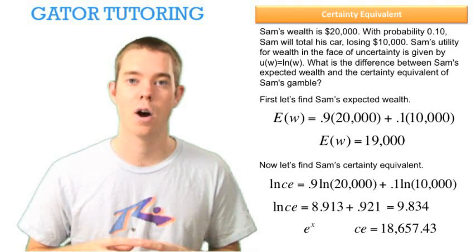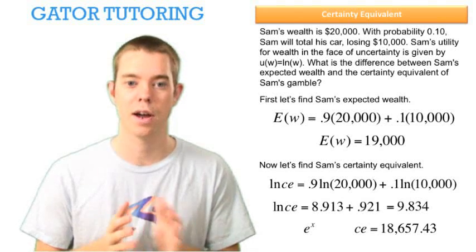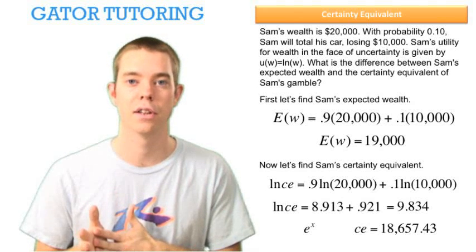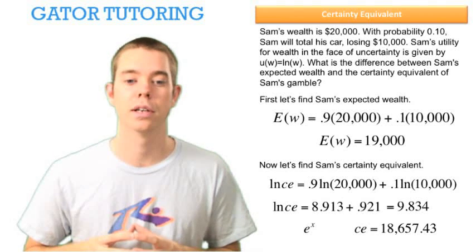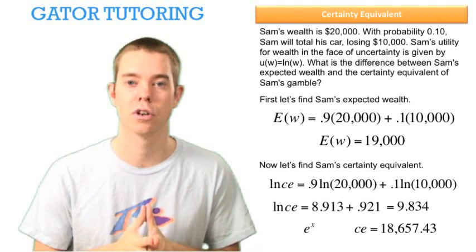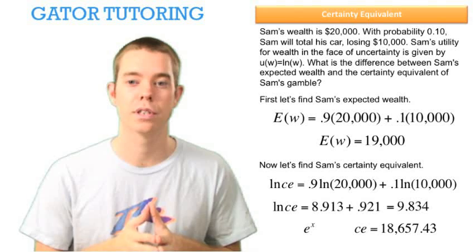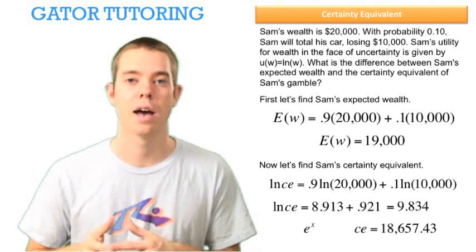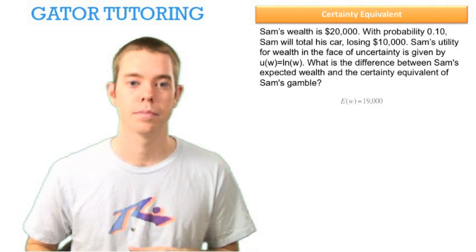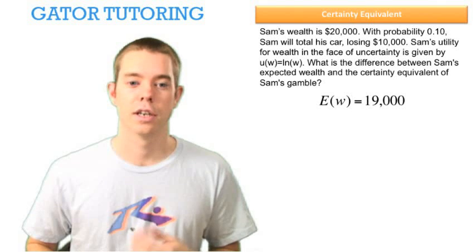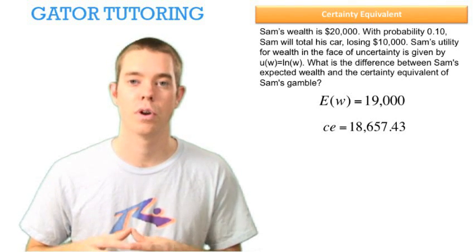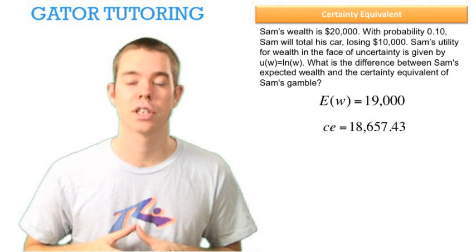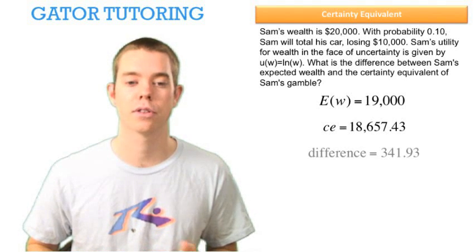So right now, we know we could either have $20,000 or $10,000 at the end of the year, but there's risk involved — we're not 100% certain what we'll have. So we'd be willing to accept $18,657.43 right now and not deal with any risk. We know that expected wealth is $19,000 and the certainty equivalent is $18,657.43. The question asks us to find the difference — we subtract those and we get $341.93.